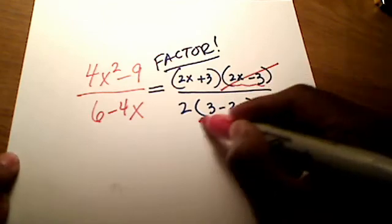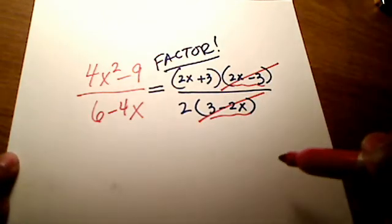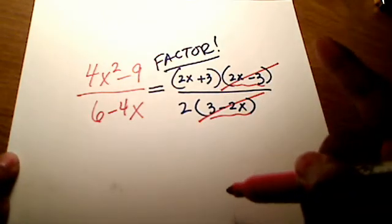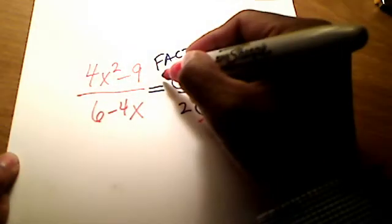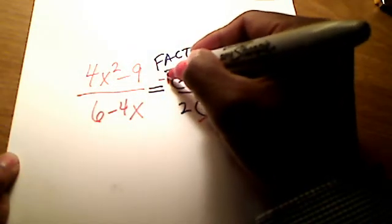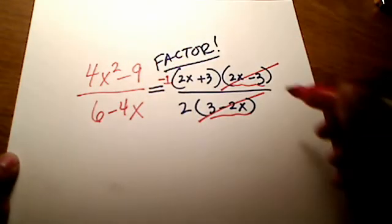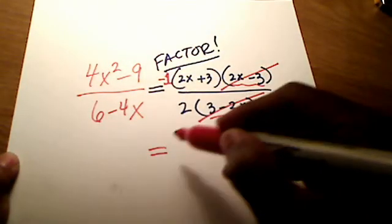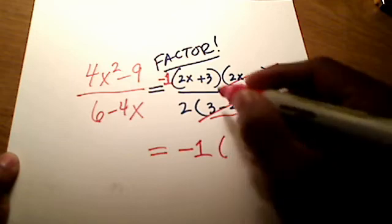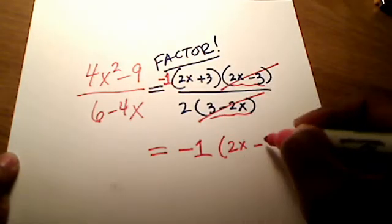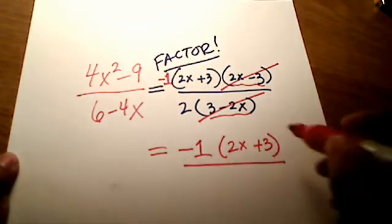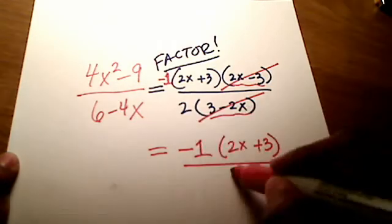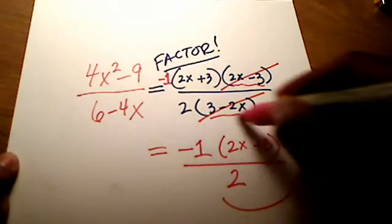So, I can cross them out now. But I have to replace it with a negative 1. Not a positive 1, but a negative 1. So, you can put that anywhere you want. How about we just slap it right there? So, there's my negative 1 that I replaced it with. So, my final answer is negative 1 times this 2x plus 3 all over, don't forget that 2 is still in the denominator. And that's it. We're done. Final answer.